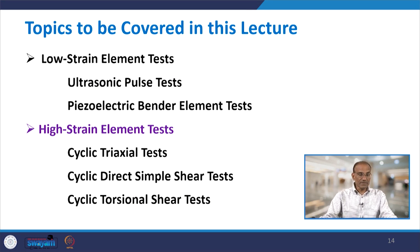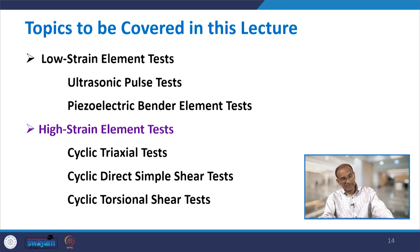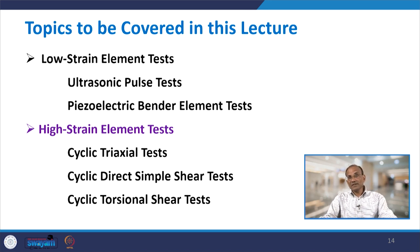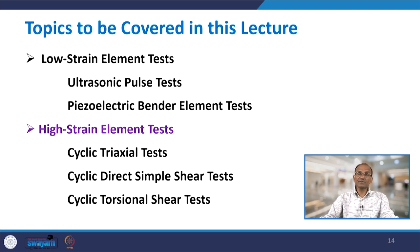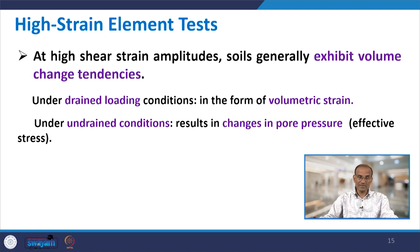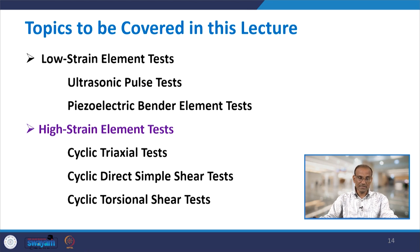With low strain element tests complete, we now discuss high strain element tests: cyclic triaxial test, cyclic direct simple shear test, and cyclic torsional shear test. At higher shear strain amplitudes, soil exhibits two types of behavior. Under drained loading, there is volumetric strain (volume change) but no development of pore water pressure.